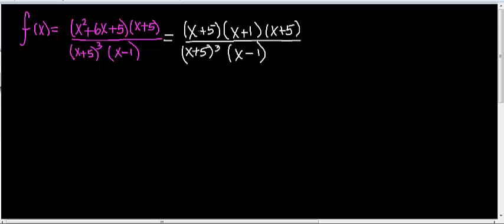I need to compare their multiplicities. x plus 5 times x plus 5 is (x plus 5) squared, meaning this zero repeats itself twice in the numerator and three times in the denominator. The multiplicity in the numerator is less than the multiplicity in the denominator, which means this is a vertical asymptote.